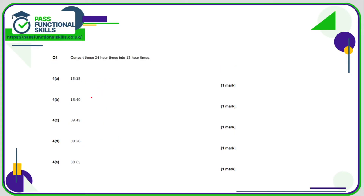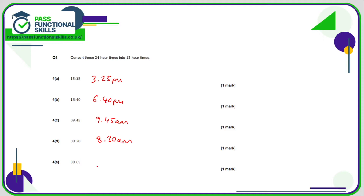For question 4 we're doing the opposite: if we've got 13 or more we subtract 12. So 15:25 take away 12 is 3:25 pm. 18:40 subtract 12 is 6:40 pm. 9:45 is simply 9:45 am — anything less than 13 we leave as it is. 08:20 is less than 13, so that is 8:20 am.